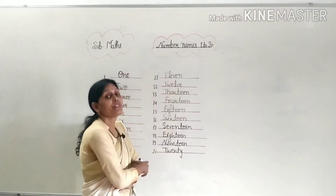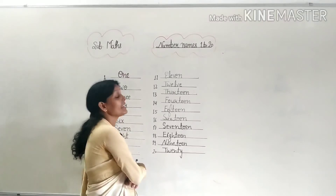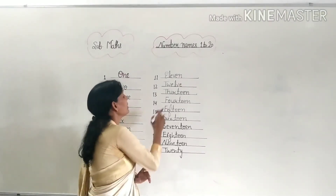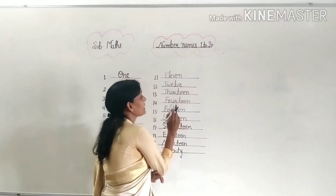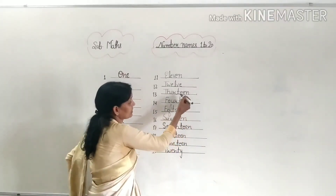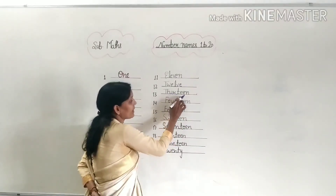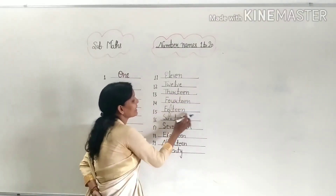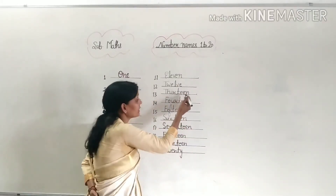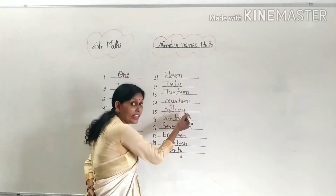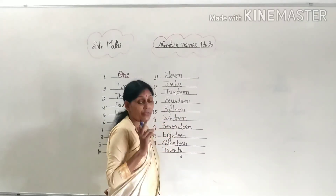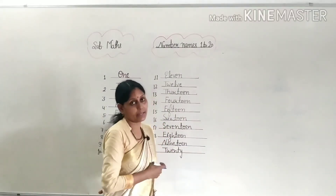And E-L-E-V-E-N 11, T-W-E-L-V-E 12, T-H-I-R-T-E-E-N 13. Notice in thirteen — T-H-I-R followed by T-E-E-N. The T-E-E-N ending is present in all of them: 13, 14, 15 — but for 15, students, you must focus extra carefully because you tend to write its spelling wrong.